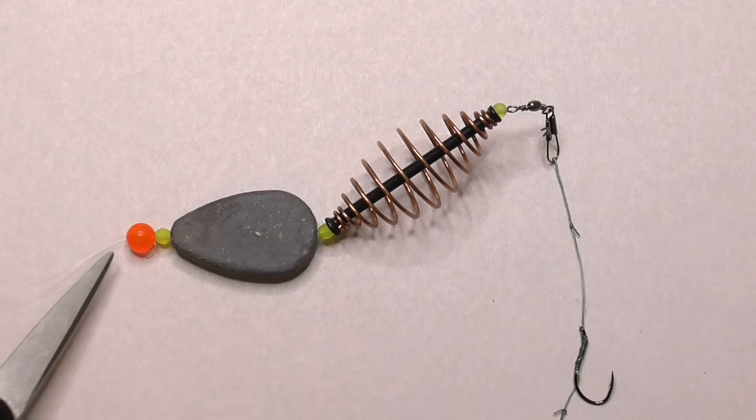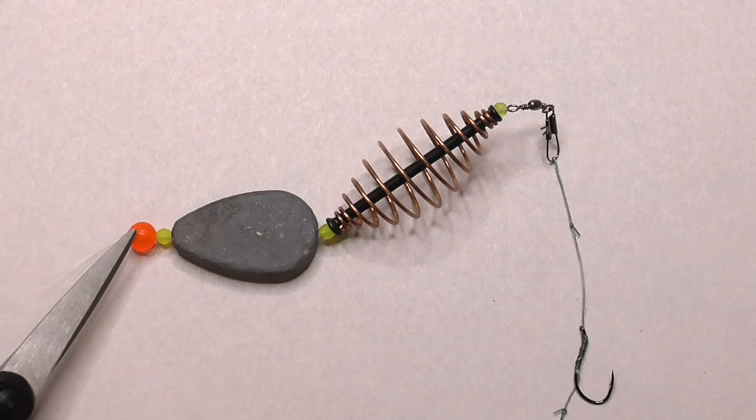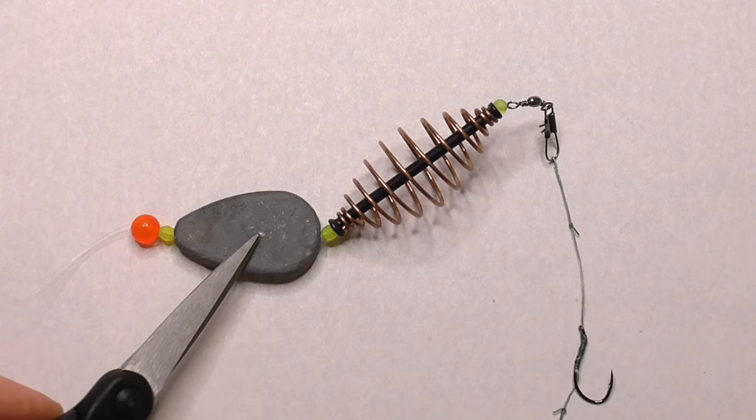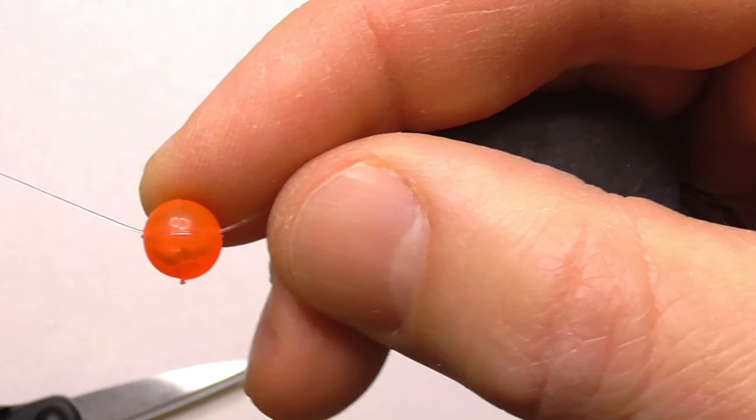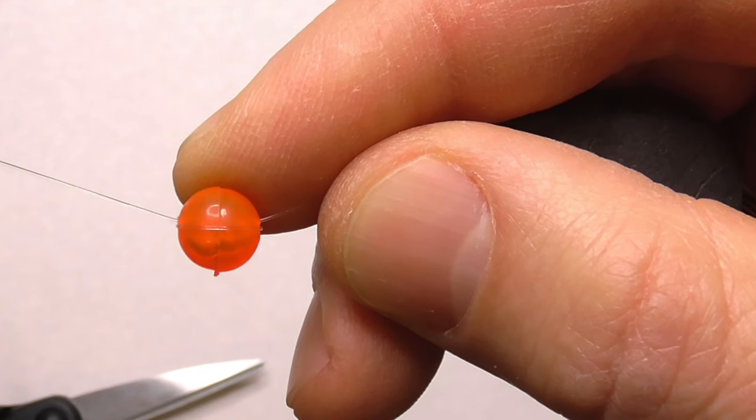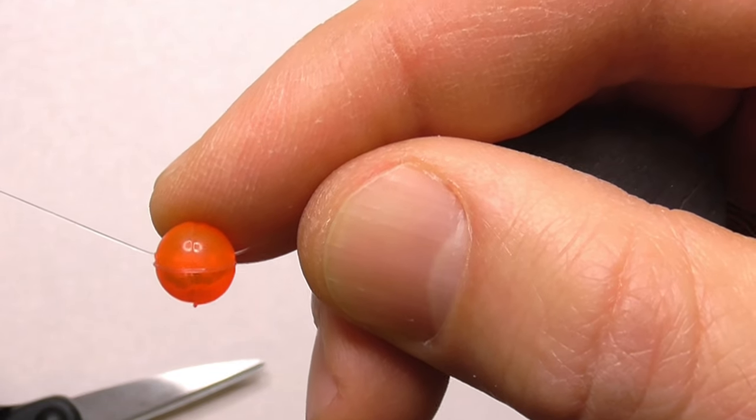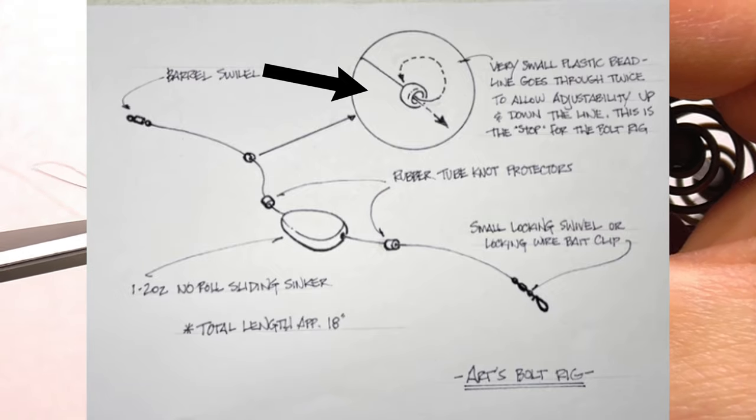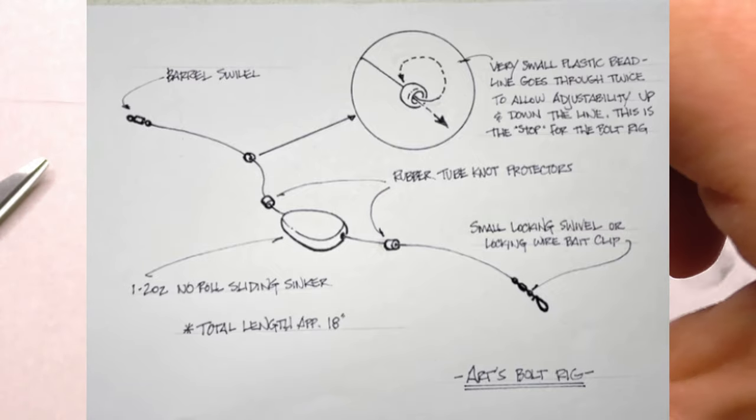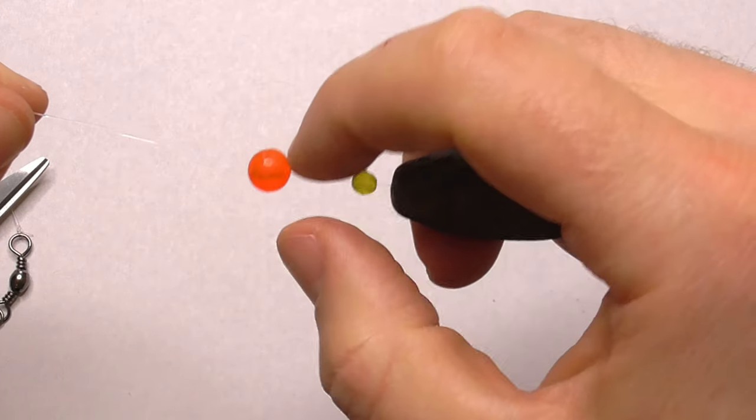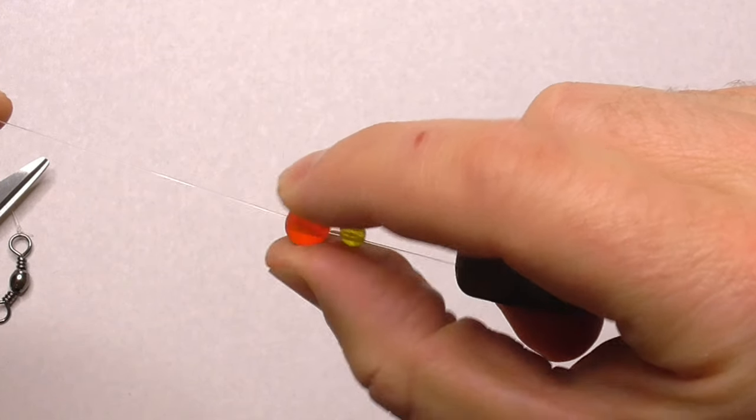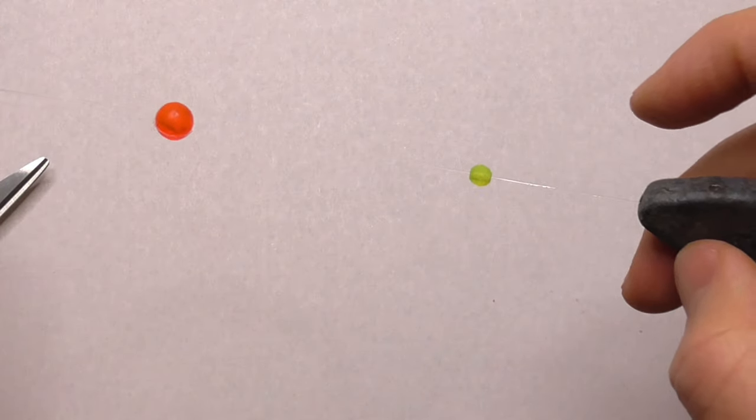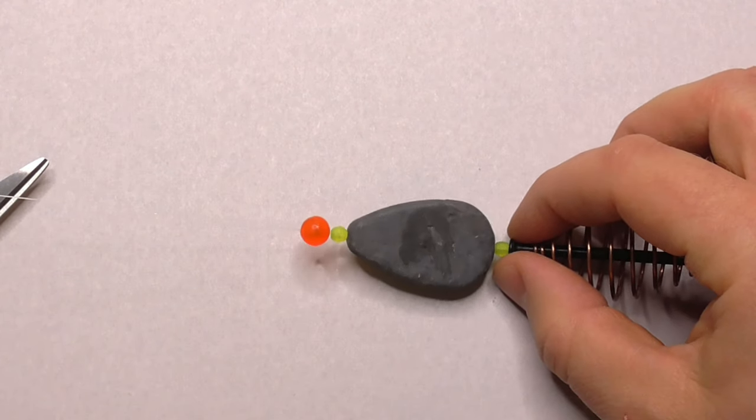So coming down the main line to the main body of the rig here, we've got this first bead here and this bead acts as a stopper to keep this sinker from sliding up the main line. And the way to accomplish that is to run the line through the bead twice. I don't know if you can see that or not, how there's the line on the outside of the bead there. The line has been run through the bead and then around and back through the bead once more, so that whenever there's any tension on the line this bead will not move, it's fixed in place. But if you let slack on the line then you can adjust that bead up the line like that or down tight against the sinker.